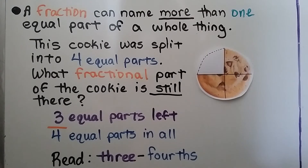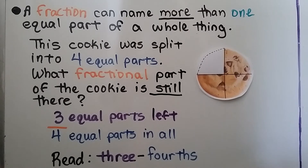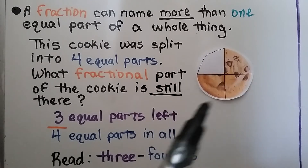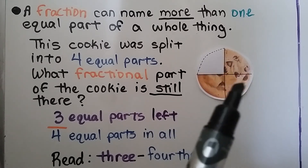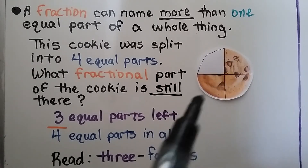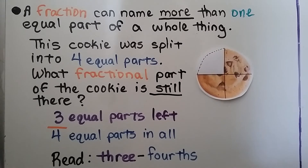A fraction can name more than one equal part of a whole thing. This cookie was split into four equal parts. What fractional part of the cookie is still there? There were four equal parts, and there are one, two, three parts left. So, three equal parts are left out of the four equal parts in all. We would read this as three-fourths.